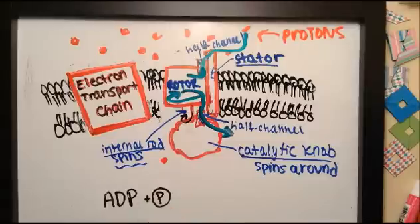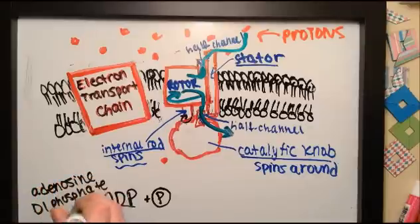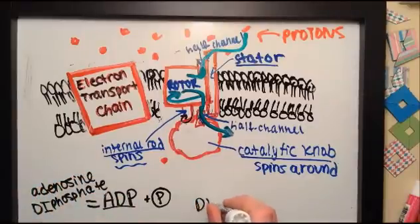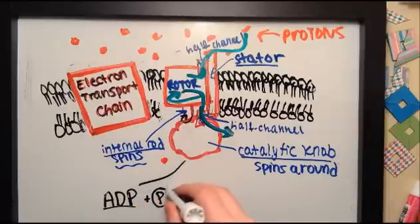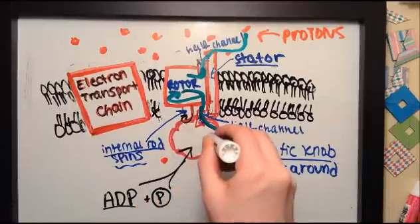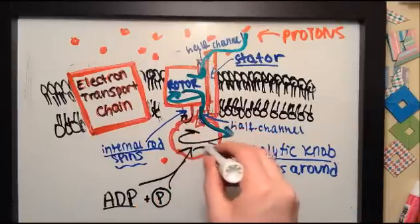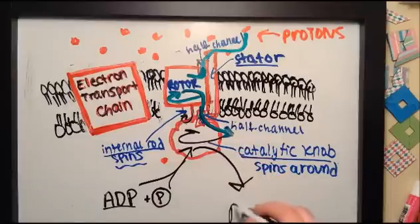Inside the catalytic knob, ADP and phosphate are bonded. ADP, or adenosine diphosphate, is just like ATP, except it only has two phosphates. Di means two. ADP and phosphate approach the catalytic knob. Here, they spin around and exit as ATP after being bonded.